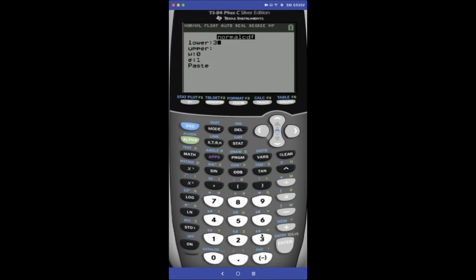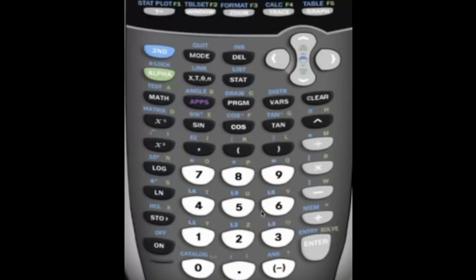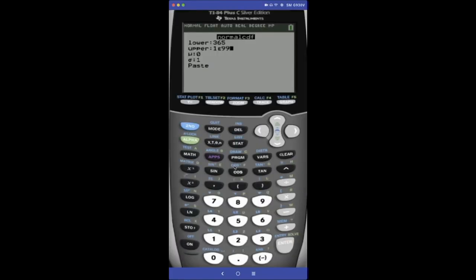So here our lower limit was 365 because we're going 365 or better. Upper limit is infinity. So we press one, and you'll see a little double E here, right here. The blue E, you press second, that, and then 99. What that E represents is 10. So you're just saying one times 10 to the power of 99. If you wanted to, you could also write one times 10 to the 99 power. You'll get the same answer.